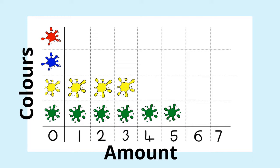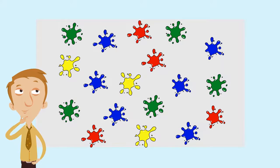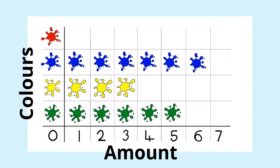Let's do the same thing again for blue splats. We'll go back we'll count them up. One, two, three, four, five, six. And we'll go back to our pictogram and put them in.